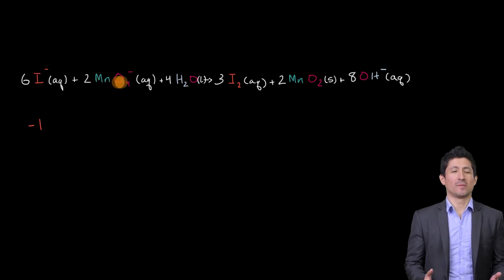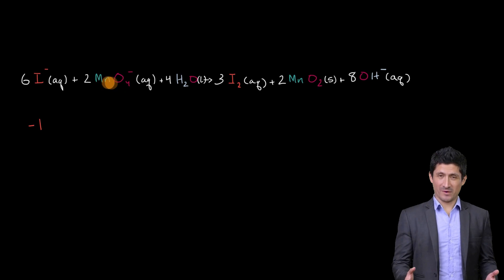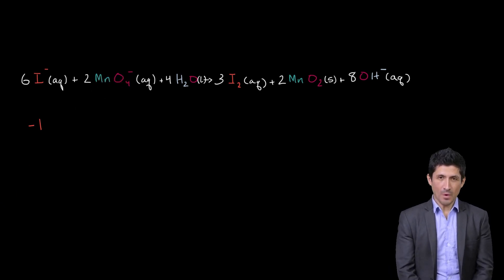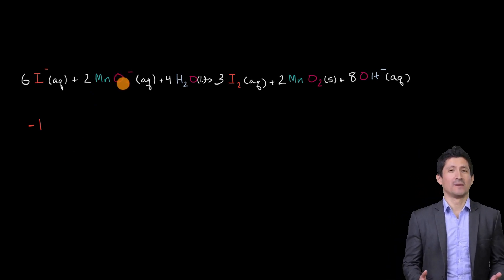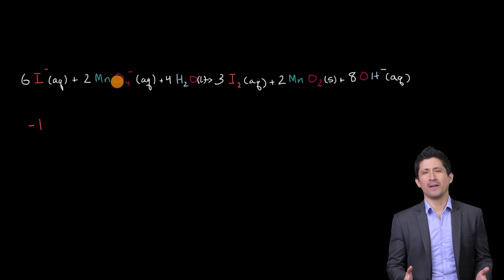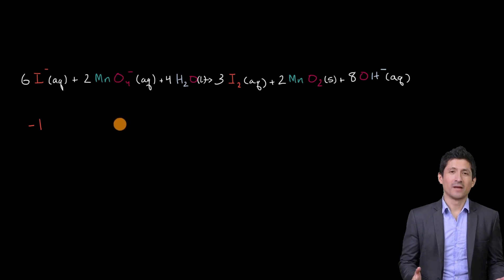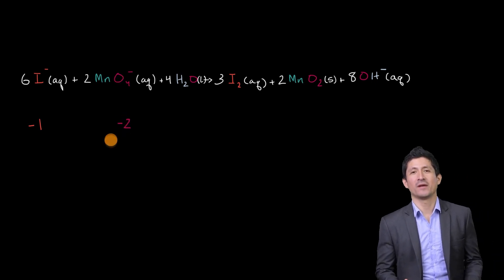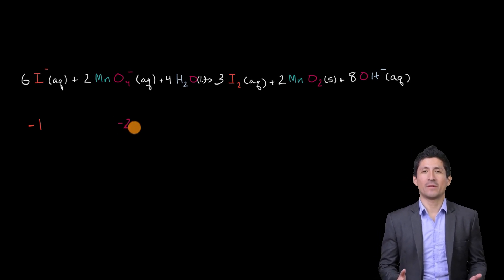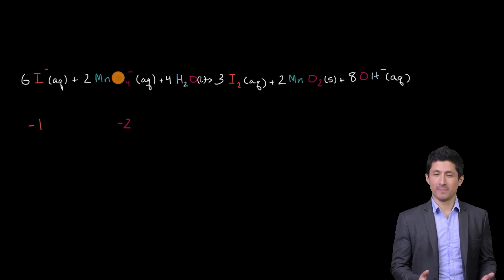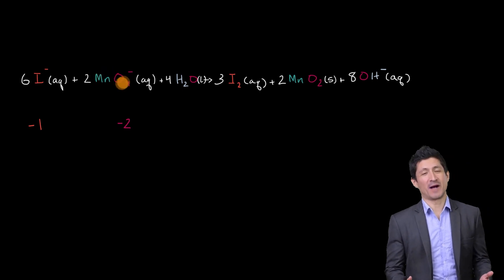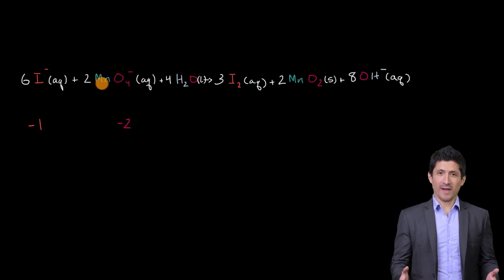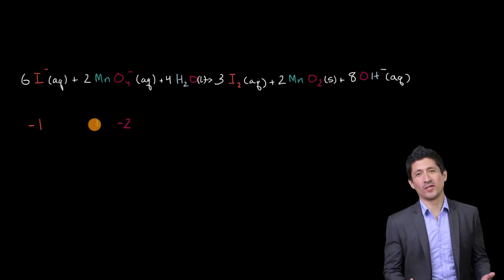Now let's move over to this permanganate ion right over here. This one's a little bit more involved. We generally remember that oxygen is quite electronegative — it is likely to hog two electrons. When we think about hypothetical charge with oxidation numbers, oxygen is going to have a negative two oxidation number. So if each of these four oxygens has a hypothetical charge of negative two, that would be negative eight total, and we see that this entire ion has a negative one charge. So that means manganese has to have an oxidation number of plus seven.